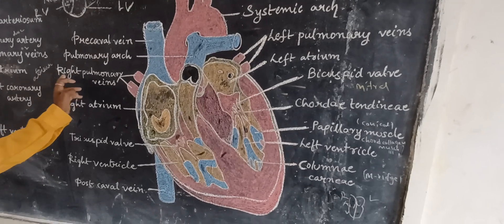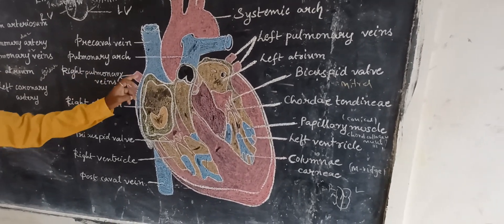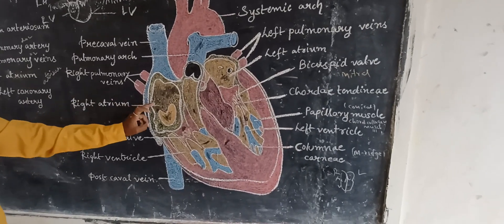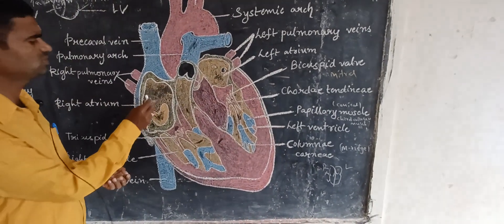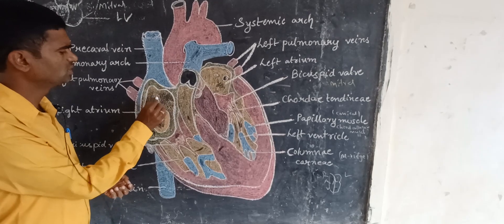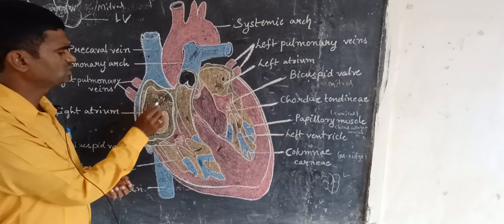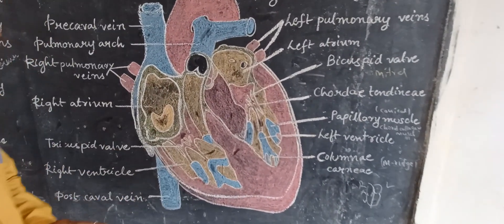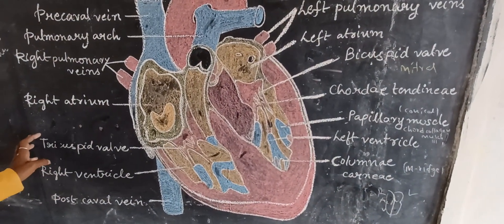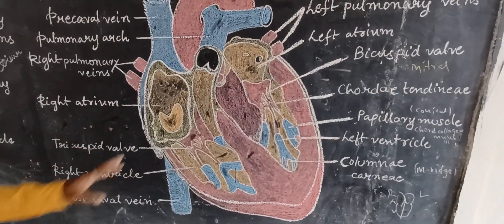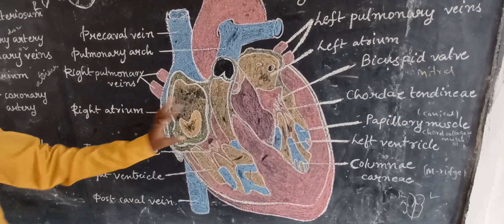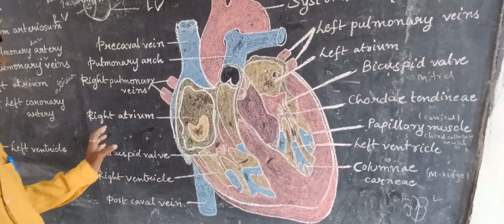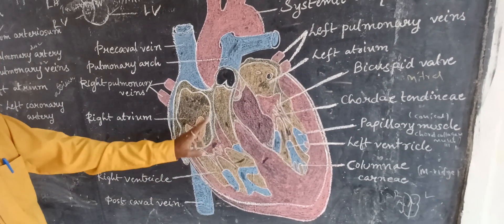The right pulmonary veins are forming. The right atrium contains the SAN node — sinoatrial node — which is generally called the pacemaker, producing a lub-dub-like sound. The Thebesian valve and other structures are all present in the right atrium.